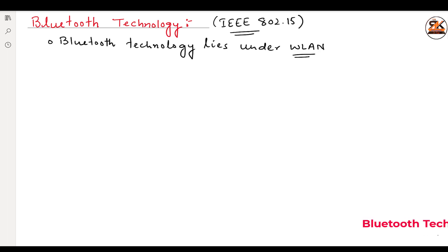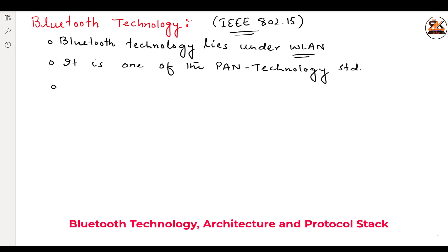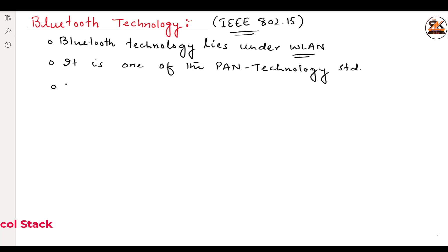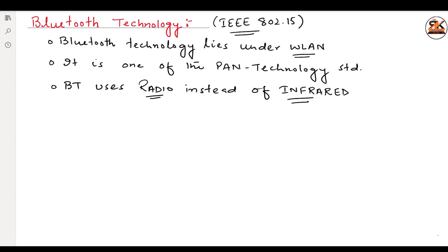Bluetooth is one of the PAN technology standards. It mainly uses radio instead of infrared. As we have seen in the previous lecture, in wireless PAN we can use infrared as well as radio signals, but Bluetooth uses only radio instead of infrared — we can only use radio signals, not infrared.